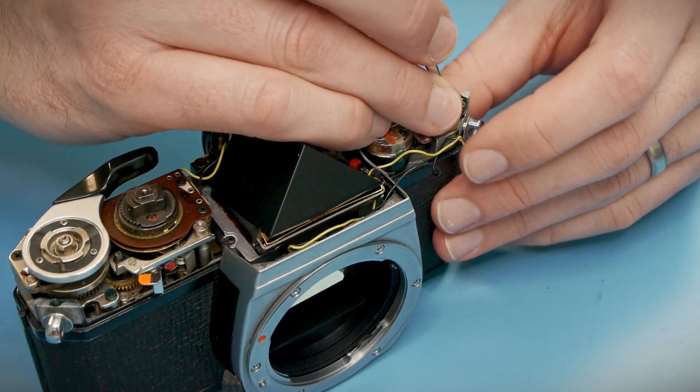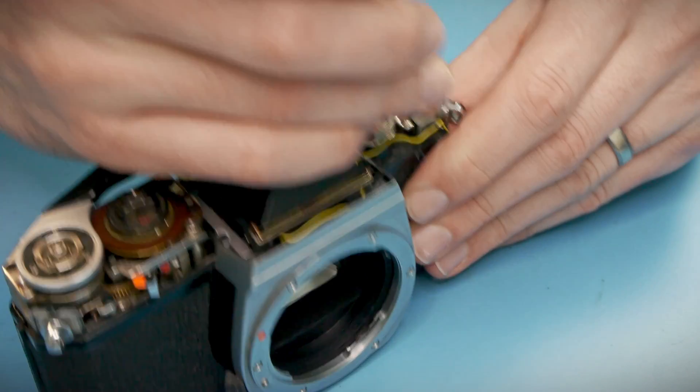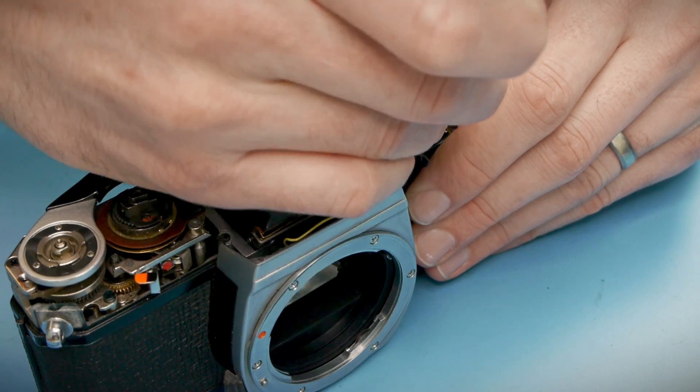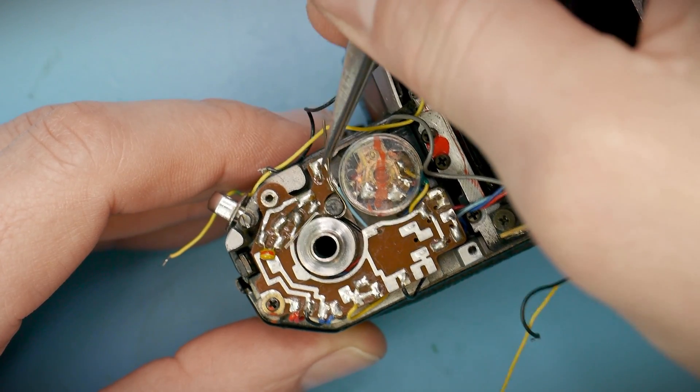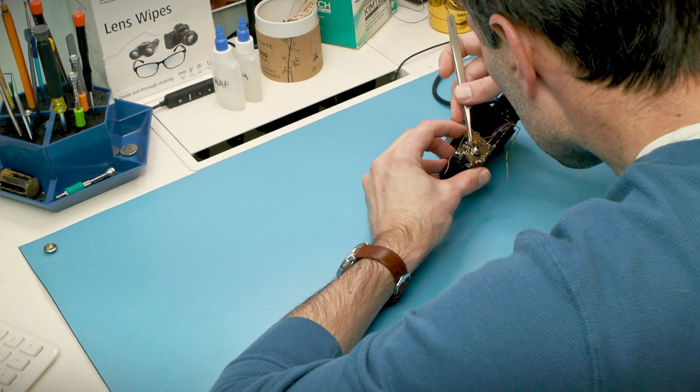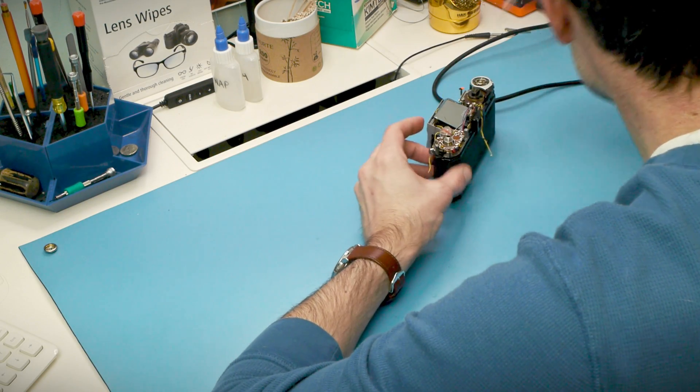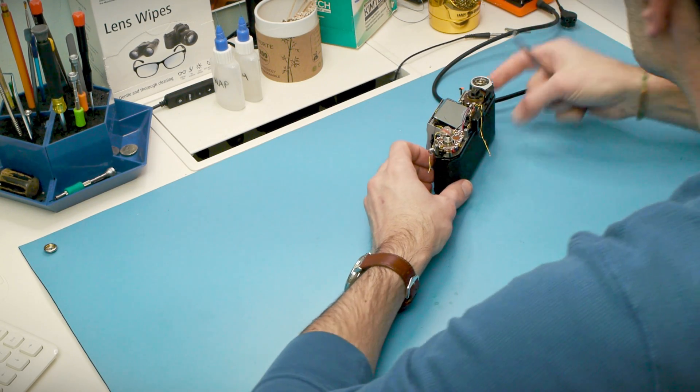This spring here provides the detent for the rewind knob. When you pull it up to rewind the film and it clicks into place that is this spring. And that clunk you just heard was the rewind fork falling out because the spring is no longer holding it in place. I'll pop the back real quick and get that out so it's not banging around.